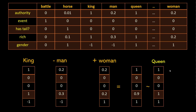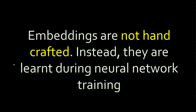Now you don't want to hand-code all these properties for all these words. Let's say you're doing natural language processing for all the text on Wikipedia — there are thousands of words — and to come up with these kinds of properties for each word will be very, very difficult.